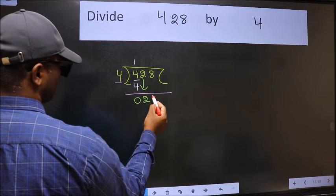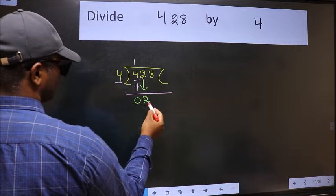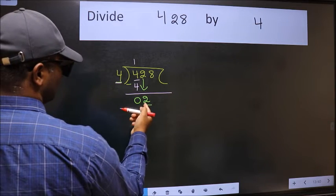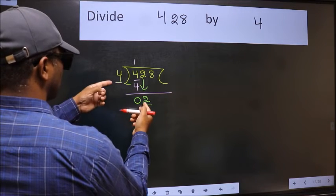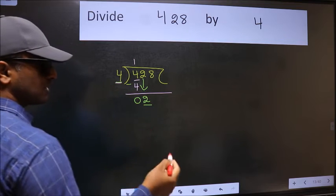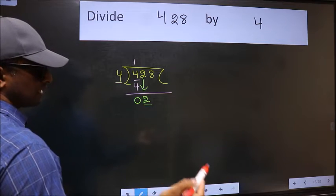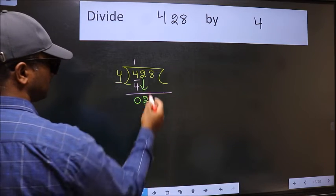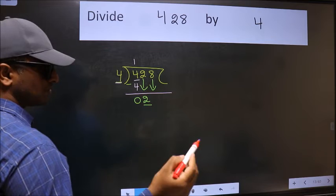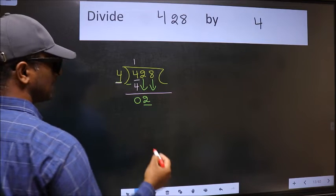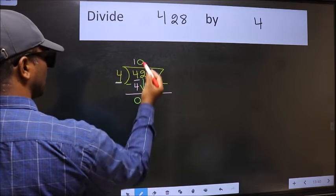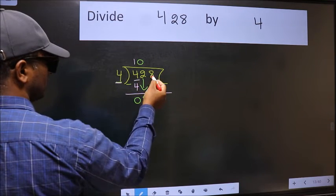Bring two down. Now here we have two, and here four. Two is smaller than four, so we should bring down the second number. The rule to bring down the second number is we should put zero here — then only we can bring this number down.